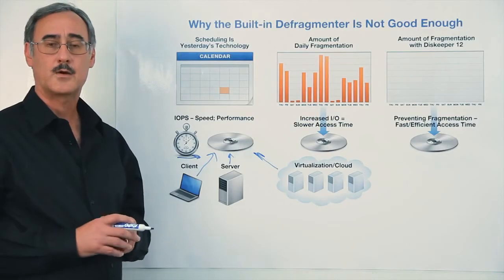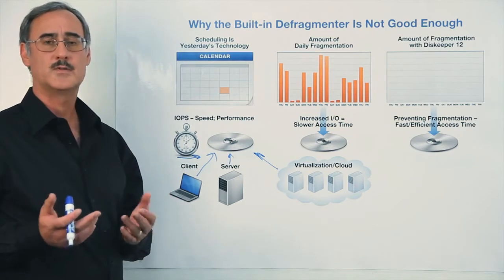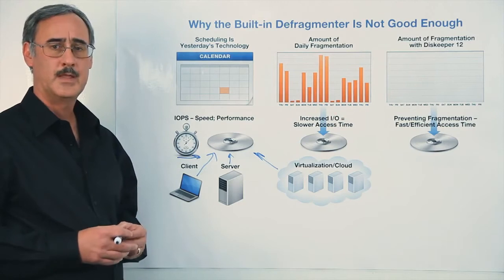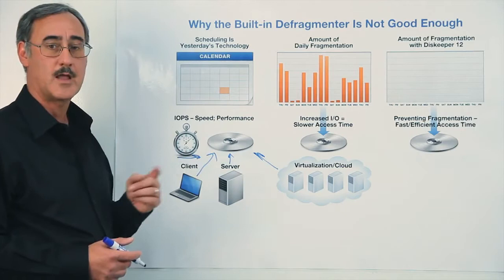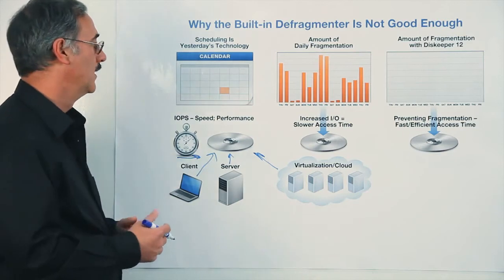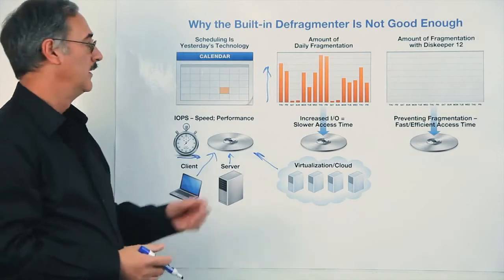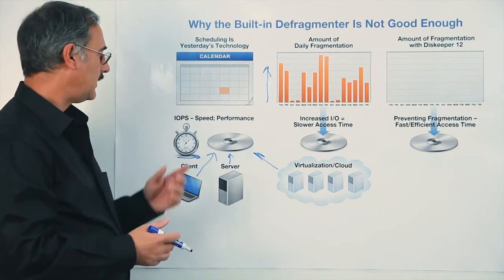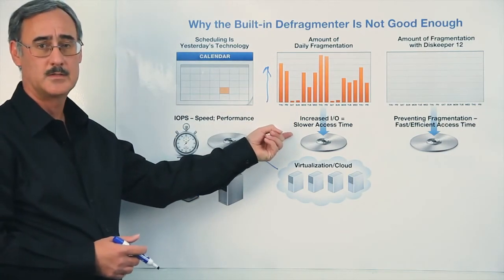One of the things that occurs within the NTFS file system within Windows is a phenomenon known as fragmentation. Files will be written into many different pieces, and as a result, each of those pieces requires a separate individual I/O transaction. As we've already stated, each I/O takes a measurable amount of time. So as fragmentation occurs on a natural, daily basis, it takes more and more I/Os to complete the job, meaning slower access time to your storage.